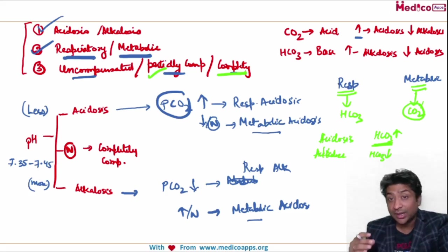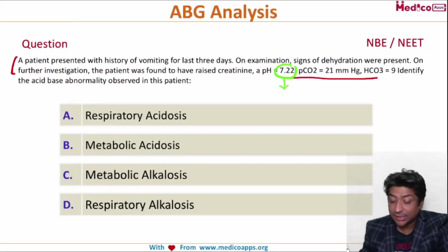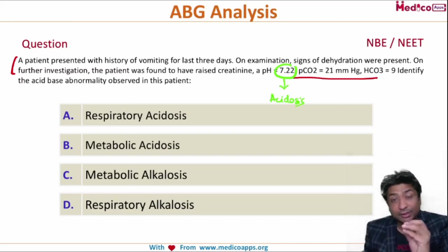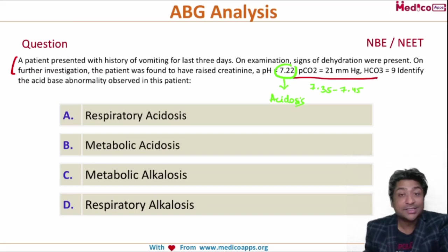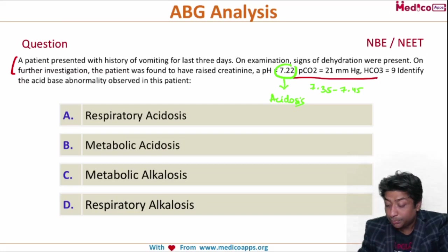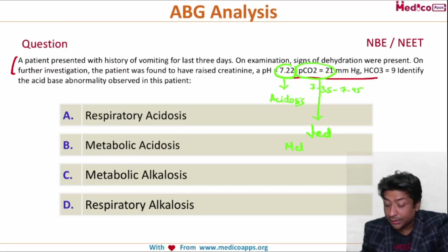Now let me take you to the question so you can very confidently answer it. The pH is 7.22 — this gives us the first answer that this is a case of acidosis, since the normal pH is 7.35 to 7.45. Because it is acidosis, we look at the pCO2 next. The pCO2 is decreased. But if it were respiratory acidosis the pCO2 should have increased — so it is definitely not respiratory acidosis. Therefore it is metabolic acidosis.